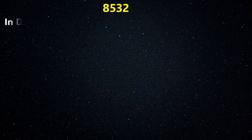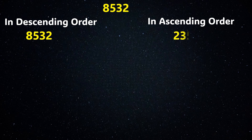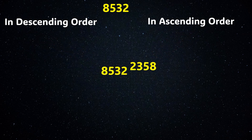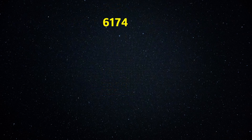We again repeat the process: write the digits of 8532 in descending order and get 8532. Write the digits in ascending order and get 2358. We subtract the smallest from the largest and get the resulting four-digit number: 6174.